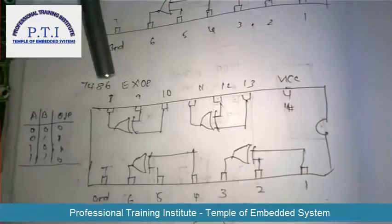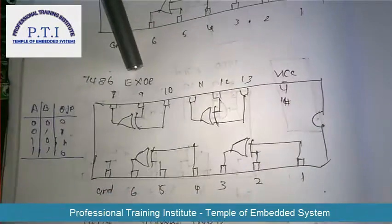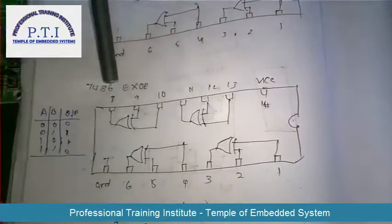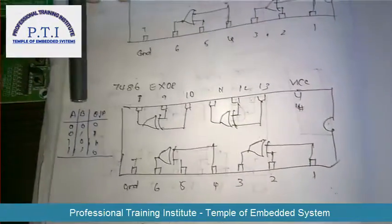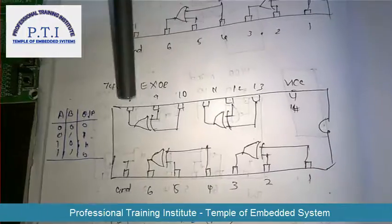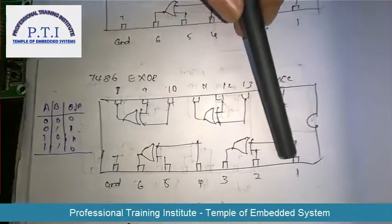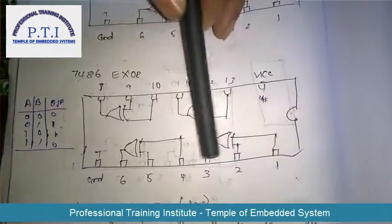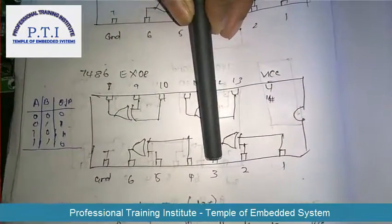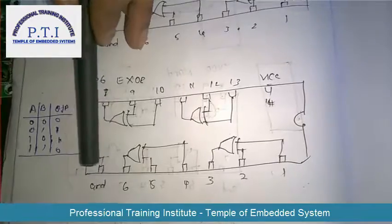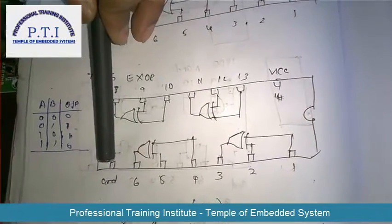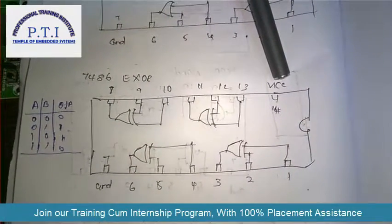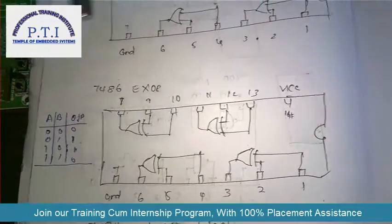This is the 7486 XOR gate. This is a pin diagram of the gate and this is a truth table. Pin number 1 and 2 are taken as inputs and pin 3 is the output. Pin 7 is ground and pin number 14 is VCC.